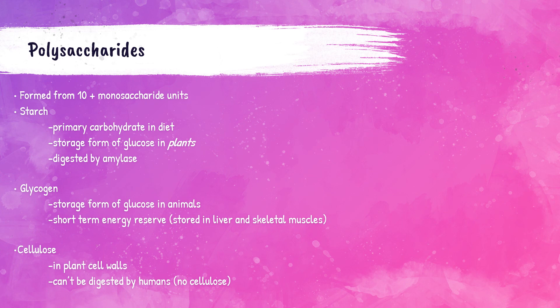Oligosaccharides are carbohydrates formed when three to ten simple sugars are linked together. Polysaccharides are carbohydrates formed from ten or more monosaccharides bonded together. Examples of polysaccharides are starch, glycogen, and cellulose. Starch is a primary carbohydrate in diets and is broken down by the enzyme amylase. Plants store glucose in the form of starch. Glycogen is the storage form of glucose in the liver and skeletal muscle of animals and can be used as a short-term energy reserve. Cellulose cannot be digested by humans due to the lack of the enzyme cellulase, and it comprises the cell wall of plants.